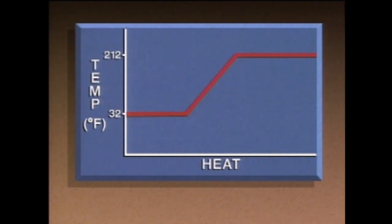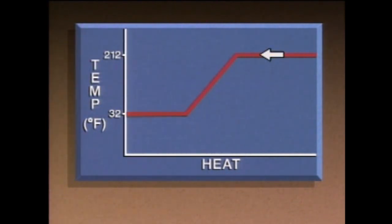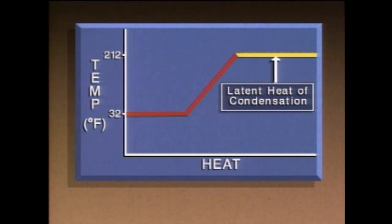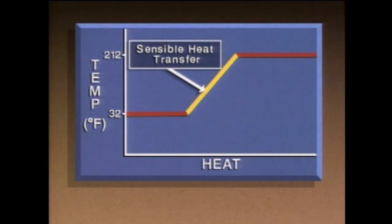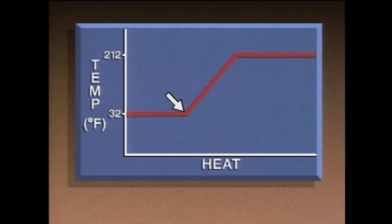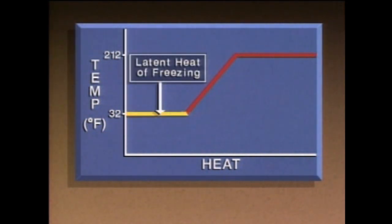If heat is removed, the heat transfer line moves in the opposite direction. When heat is removed from steam, the steam starts to condense into water — the steam condenses rather than vaporizes. This line represents the latent heat of condensation, which is the amount of heat that has to be removed from a substance to condense it without producing a change in temperature or pressure. When heat is removed from water, there is a sensible heat transfer and the water temperature drops until it reaches 32 degrees. At that point, any heat removed is latent heat, so the temperature remains at 32 degrees — this line represents the latent heat of freezing, the amount of heat that has to be removed to freeze a substance without producing a change in temperature or pressure.